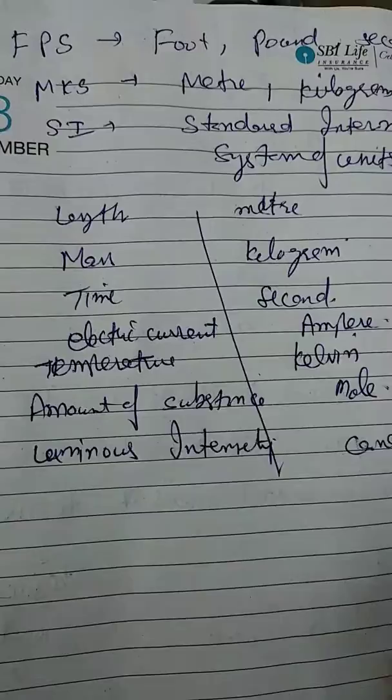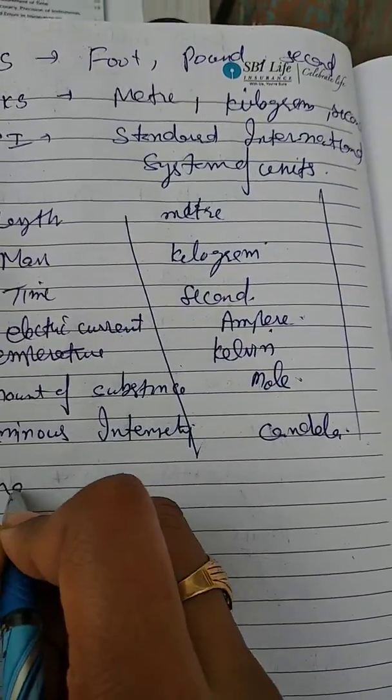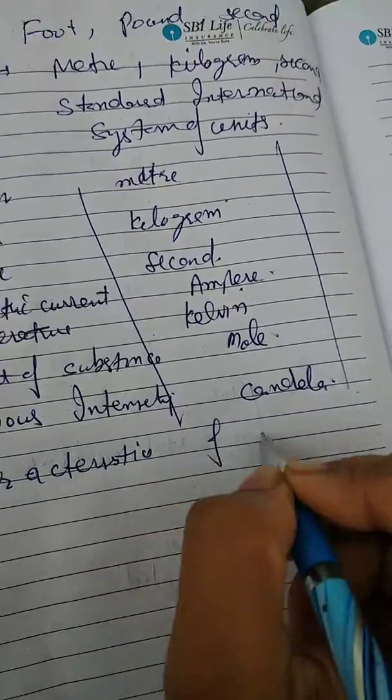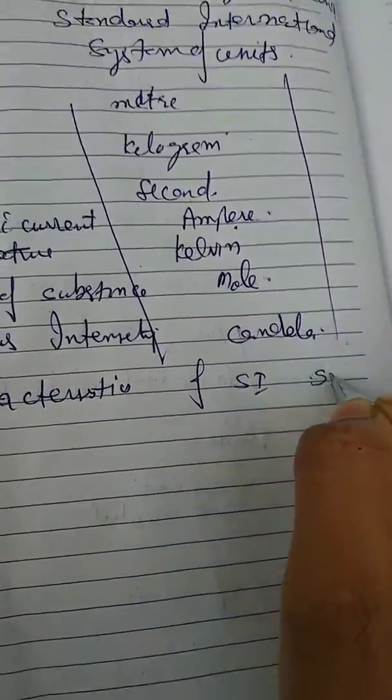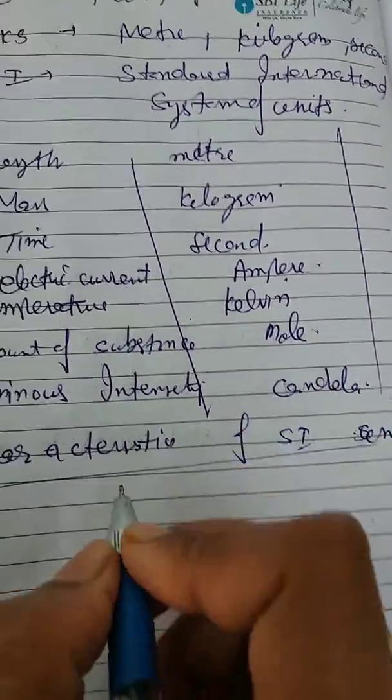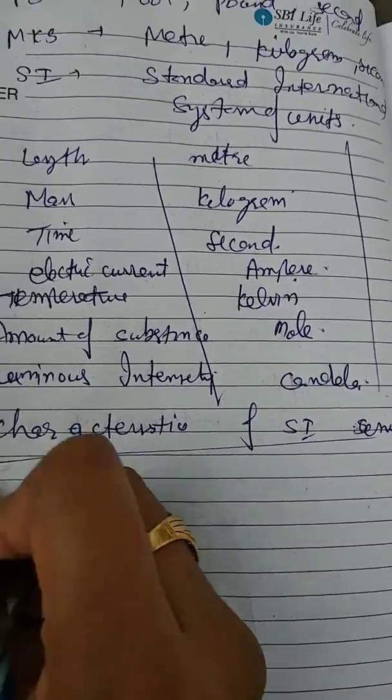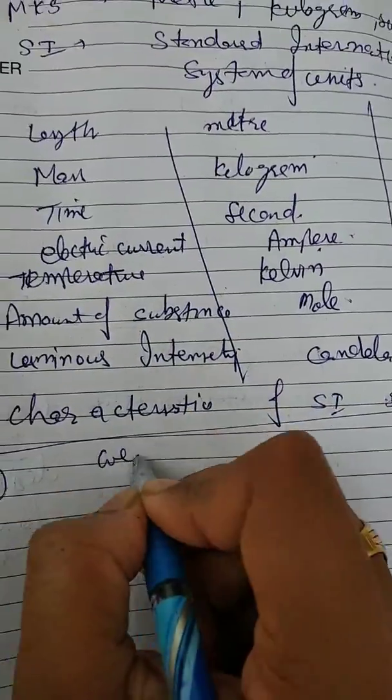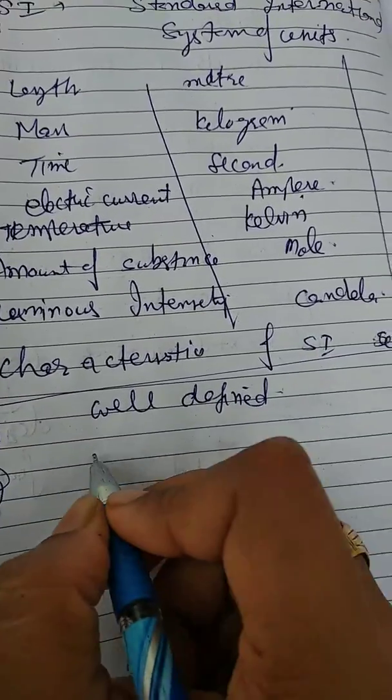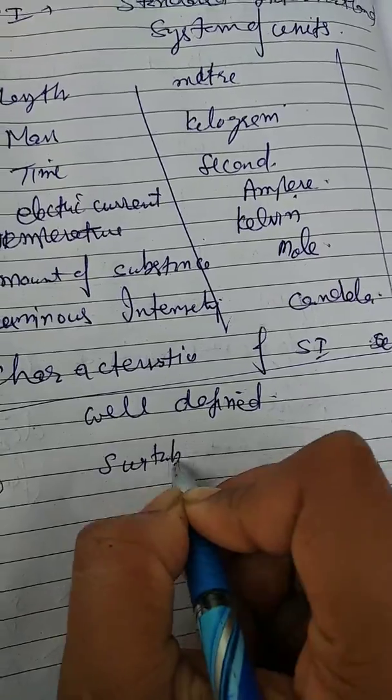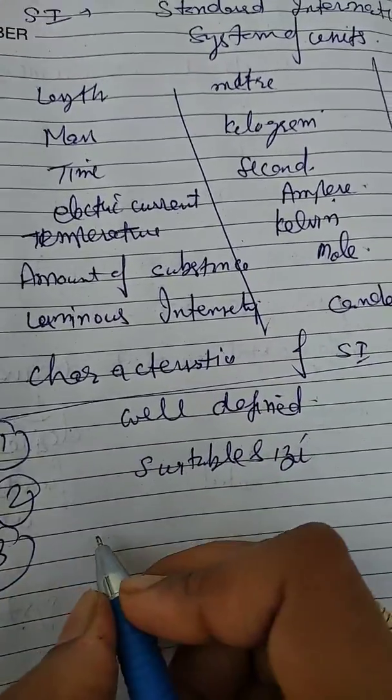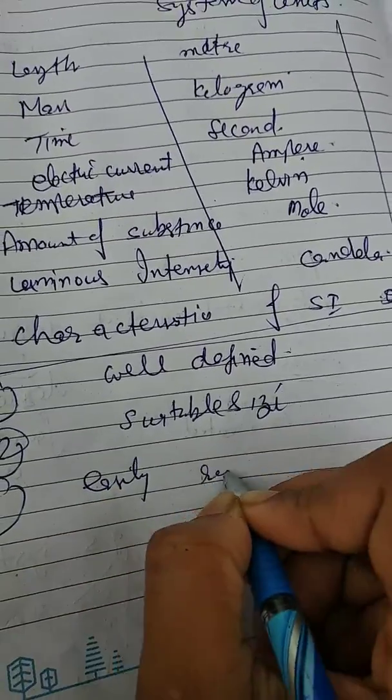Now the basic characteristics of SI system or SI system of units. Number one: it should be well defined. Second, it should be of a stable size. Third, it should be easily reproducible.